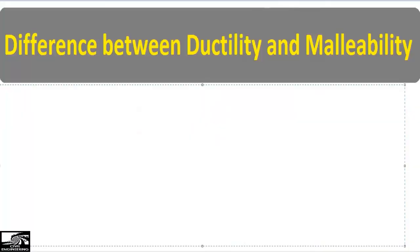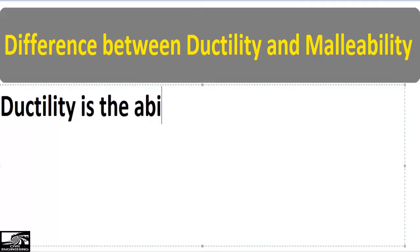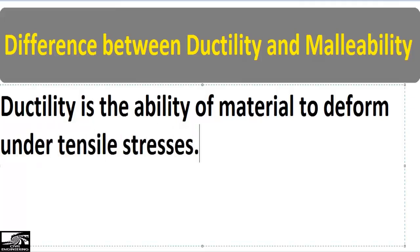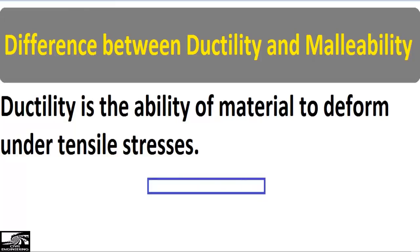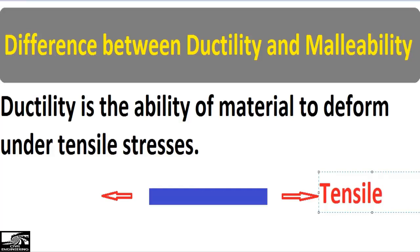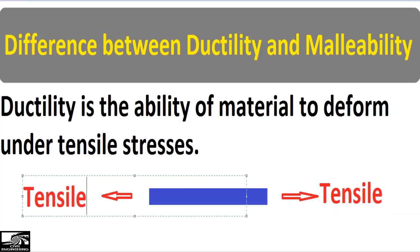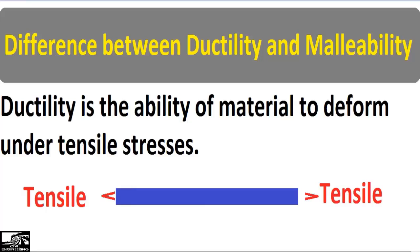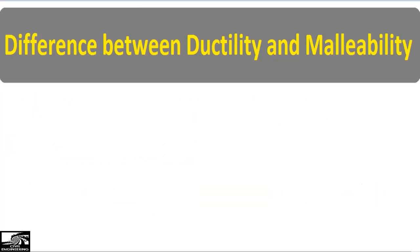Today's topic is the difference between ductility and malleability. Ductility is defined as the ability of a material to deform under tensile stresses. For example, consider any material with tensile loads applied in both directions. Under these tensile stresses, the material will be stretched outward in both directions. This is the definition of ductility.